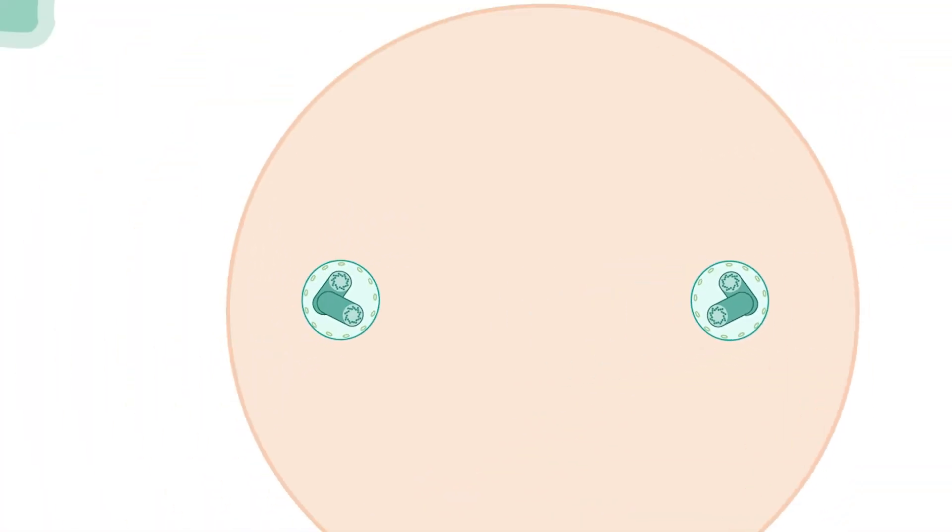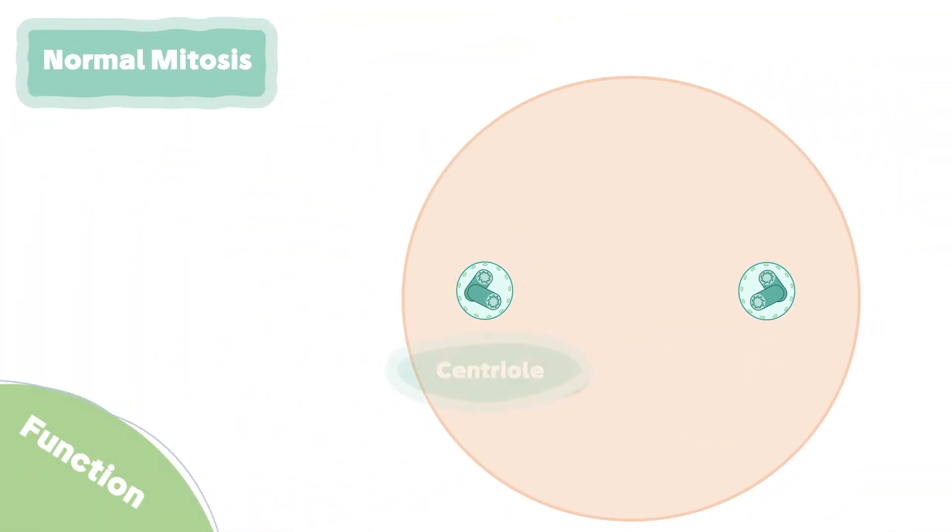These centers radiate microtubules which extend to grab the chromosomes from both sides and align them to the middle of the cell.